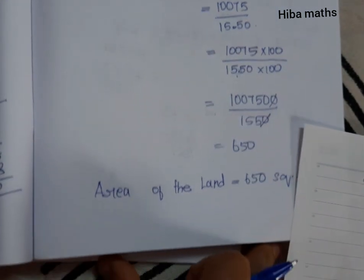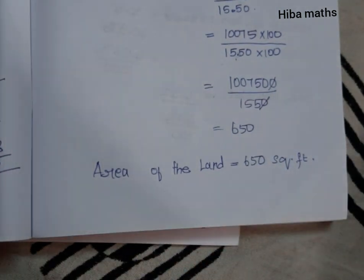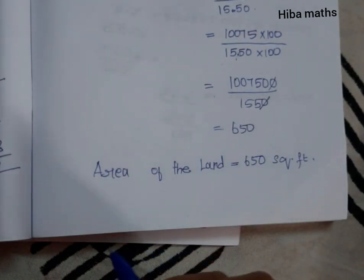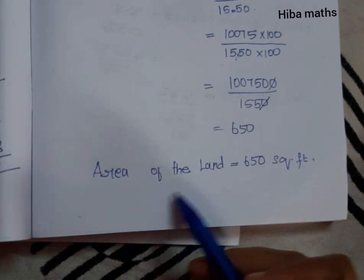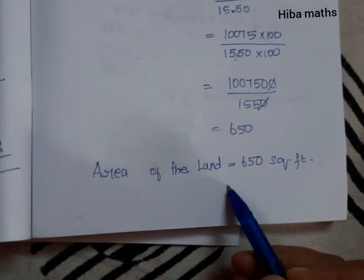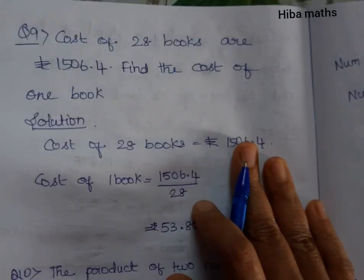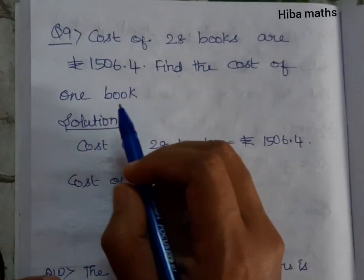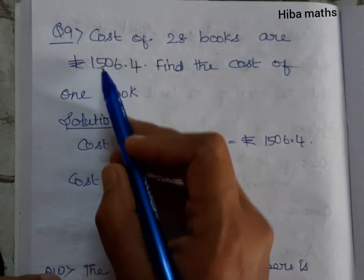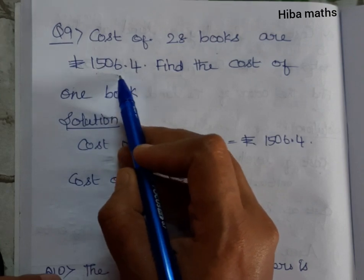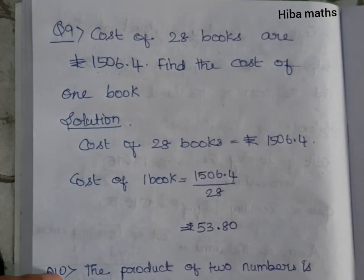So the answer is 650. Area of land is equal to 650 square feet. Ninth question: cost of 28 books is rupees 1506.4. Find the cost of one book.